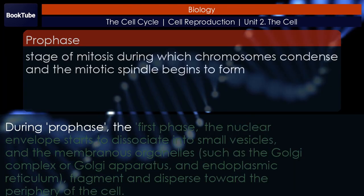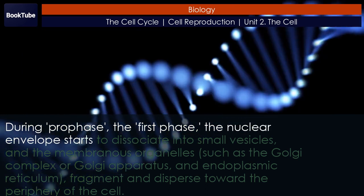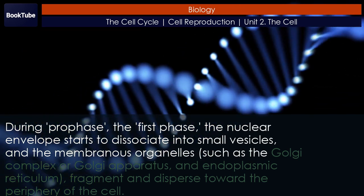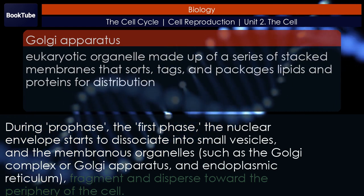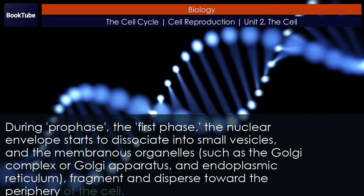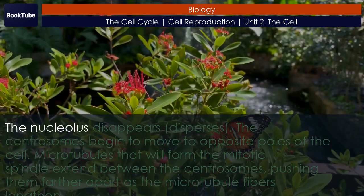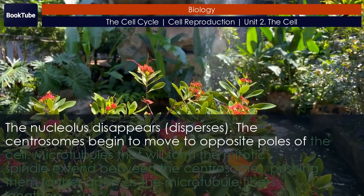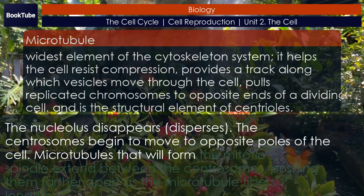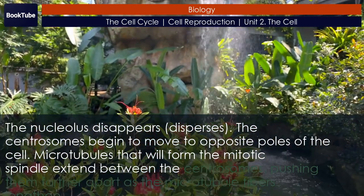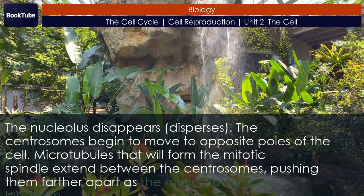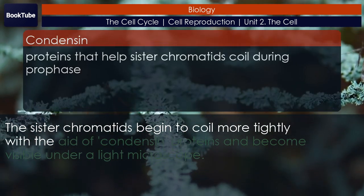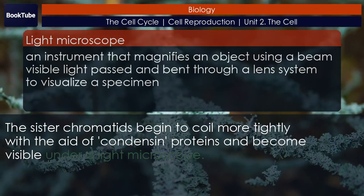During prophase, the first phase, the nuclear envelope starts to dissociate into small vesicles, and the membranous organelles such as the Golgi complex or Golgi apparatus and endoplasmic reticulum fragment and disperse toward the periphery of the cell. The nucleolus disappears. The centrosomes begin to move to opposite poles of the cell. Microtubules that will form the mitotic spindle extend between the centrosomes, pushing them farther apart as the microtubule fibers lengthen. The sister chromatids begin to coil more tightly with the aid of condensin proteins and become visible under a light microscope.